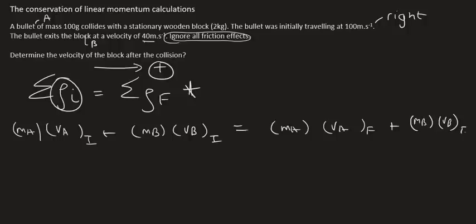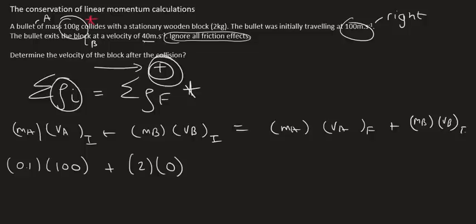Okay, now you just fill everything in. So A is our bullet, which is 100 grams. Please be careful that you convert that into kilograms. And so that's going to be 0.1 kilograms. Its initial velocity was 100 meters per second. I can keep that positive because it's going to the right. Plus, the mass of the block is 2 kilograms, but its initial velocity is 0. Why? Because it's initially stationary.